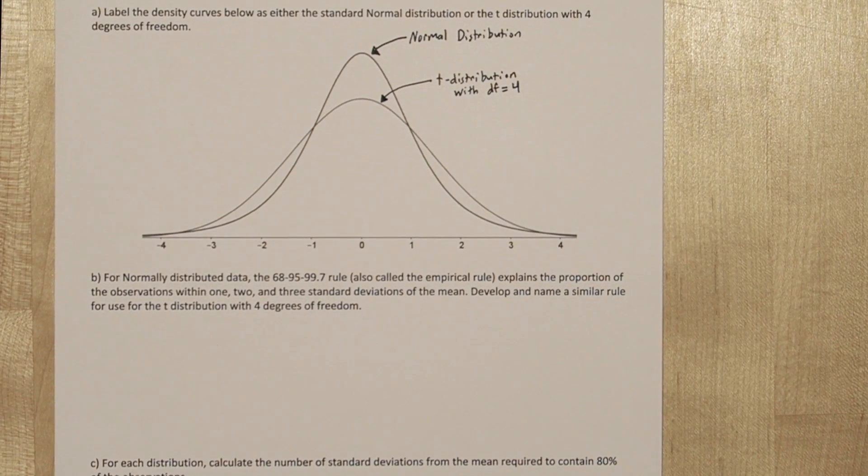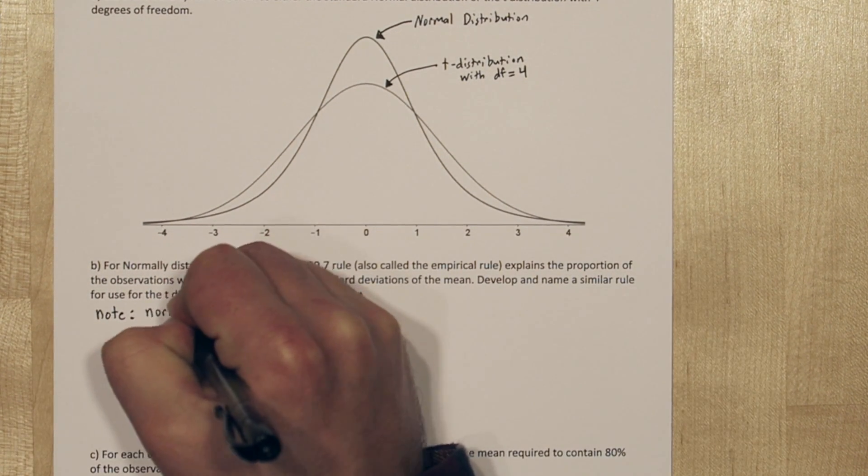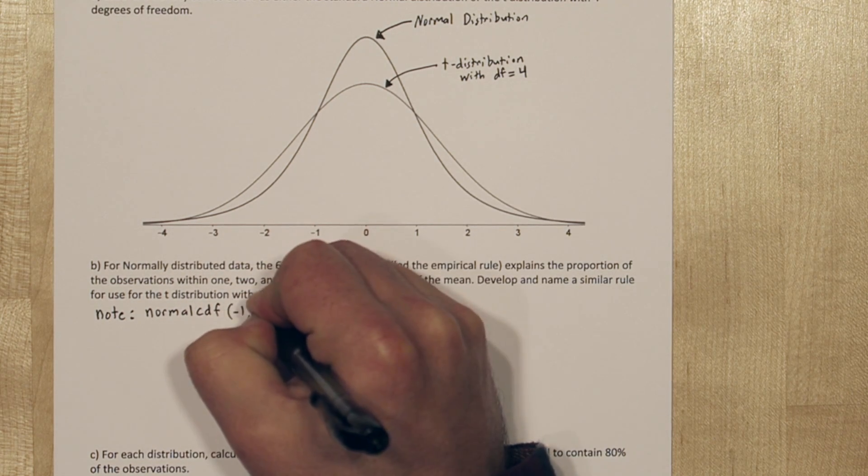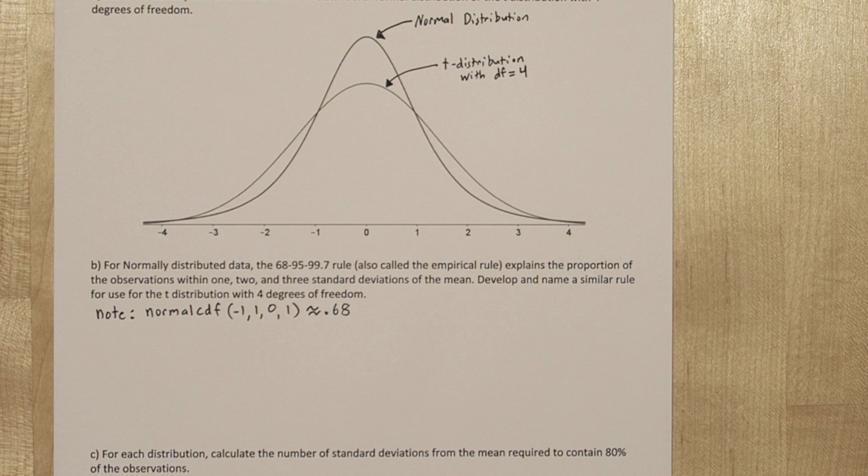For the next one, we're going to use the CDF functions. Note that normal CDF from negative 1 to 1 for 0, 1, so the standard normal distribution, returns approximately 0.68.